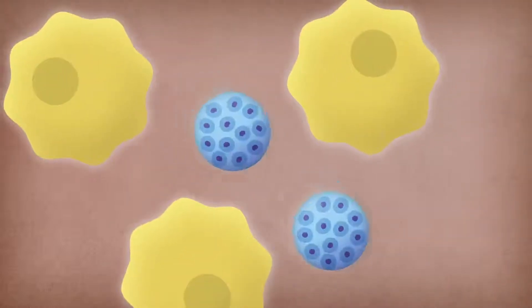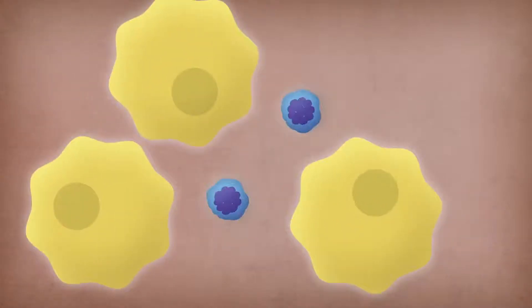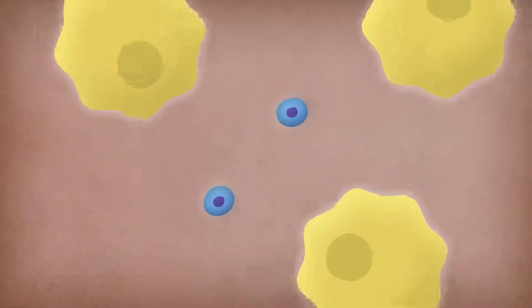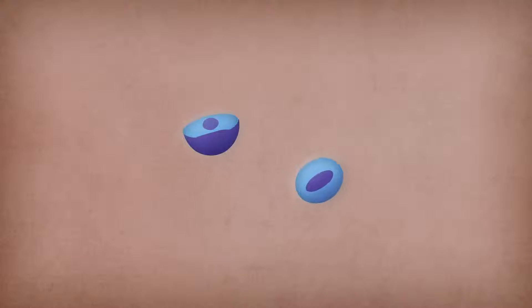The Plasmodium undergoes multiple changes in the human body, from sporozoite, to trophozoite, to schizont, to merozoite, and lastly, gametocyte. These metamorphoses enable it to circumvent the barriers of its host's immune system.